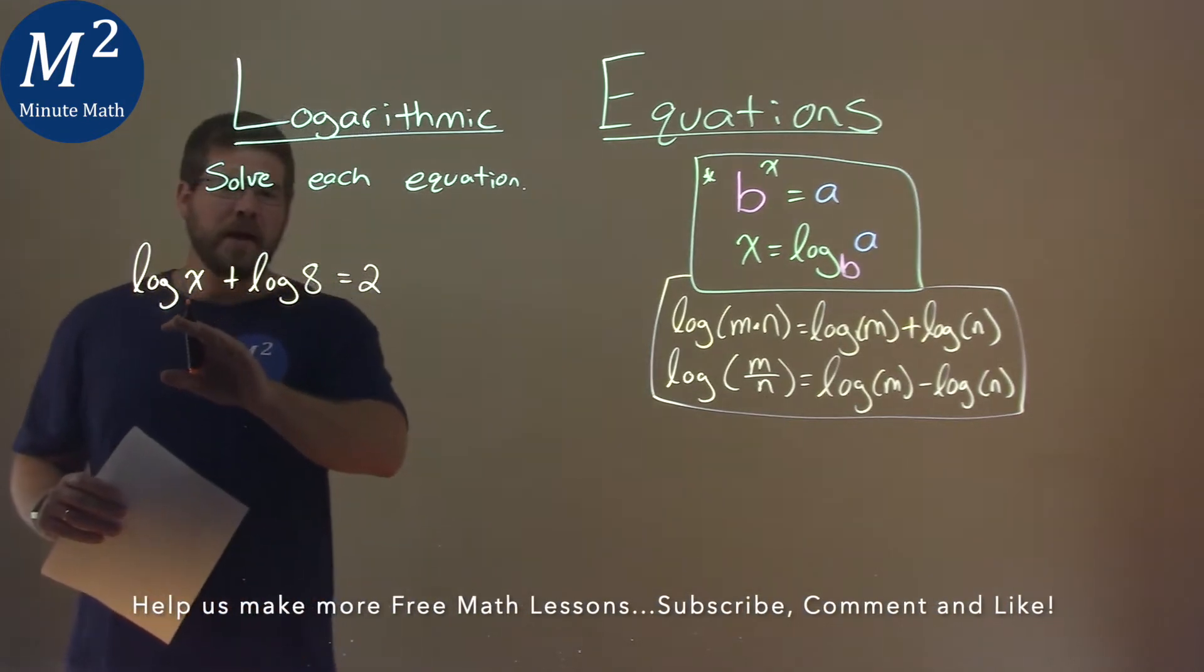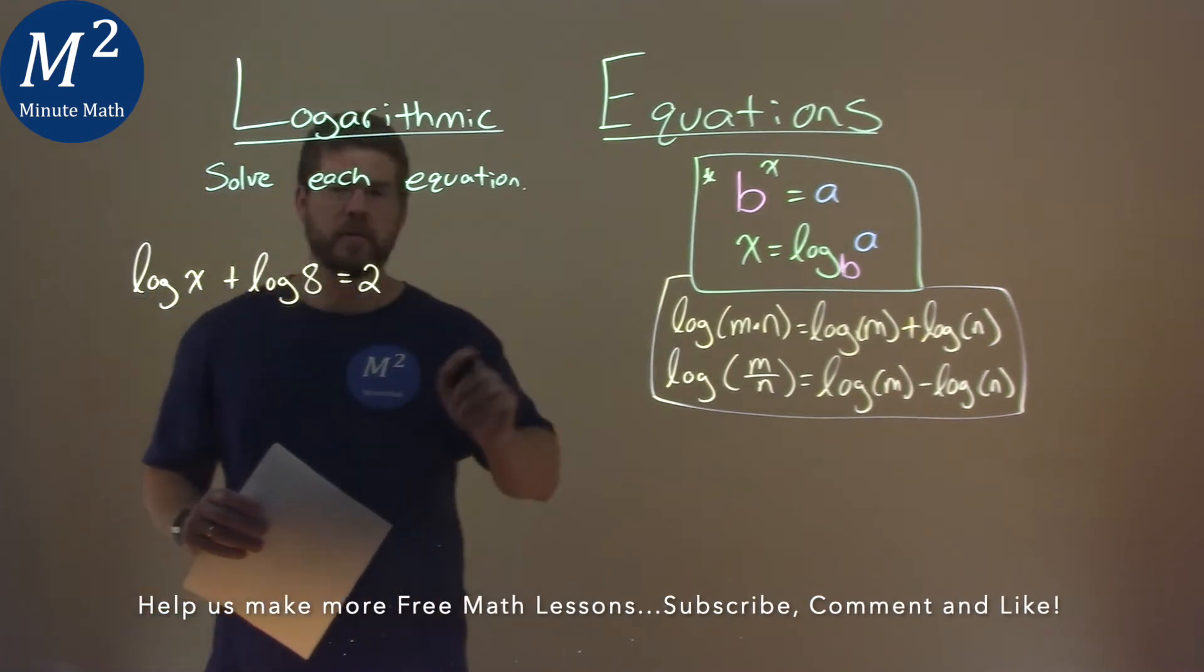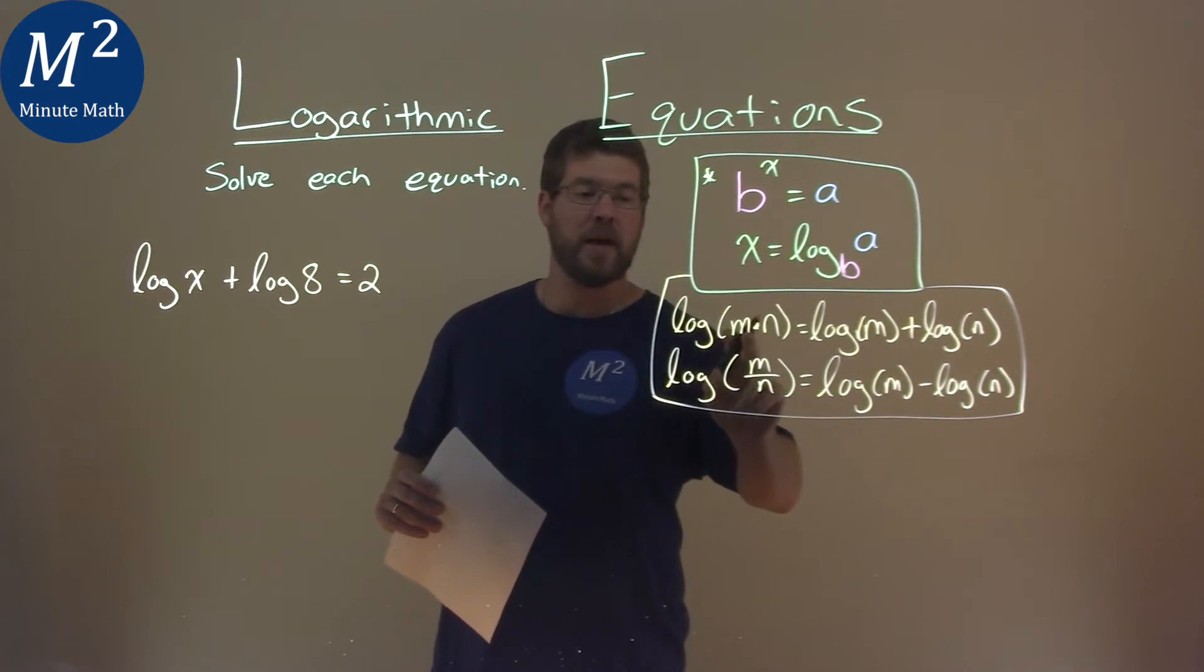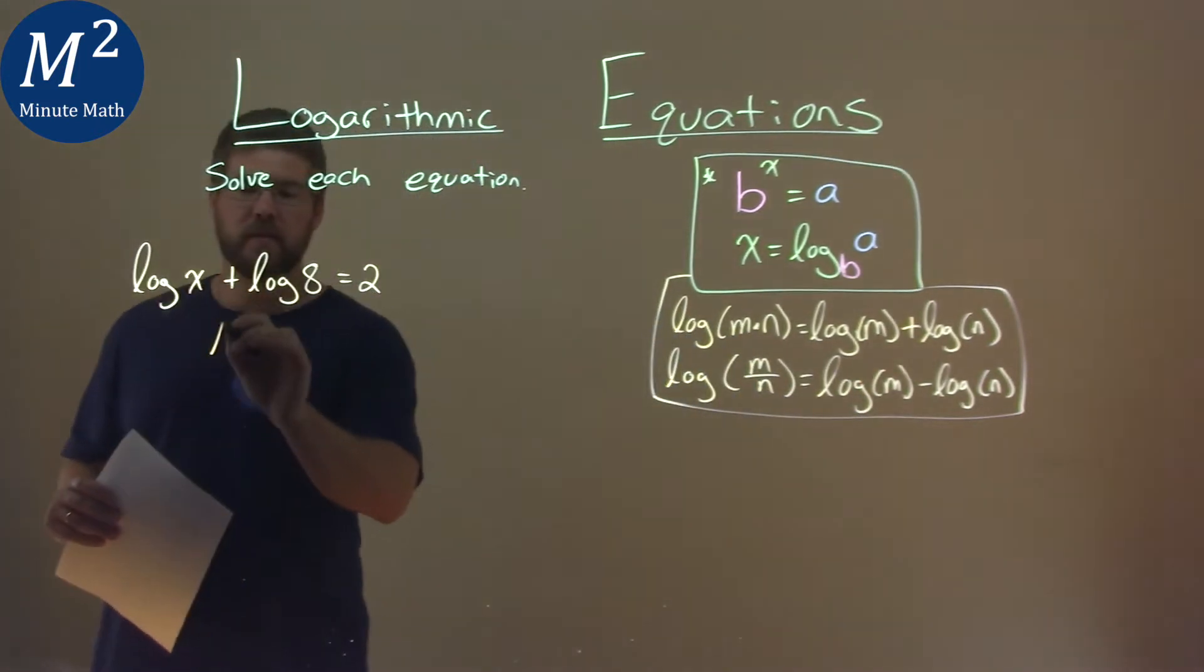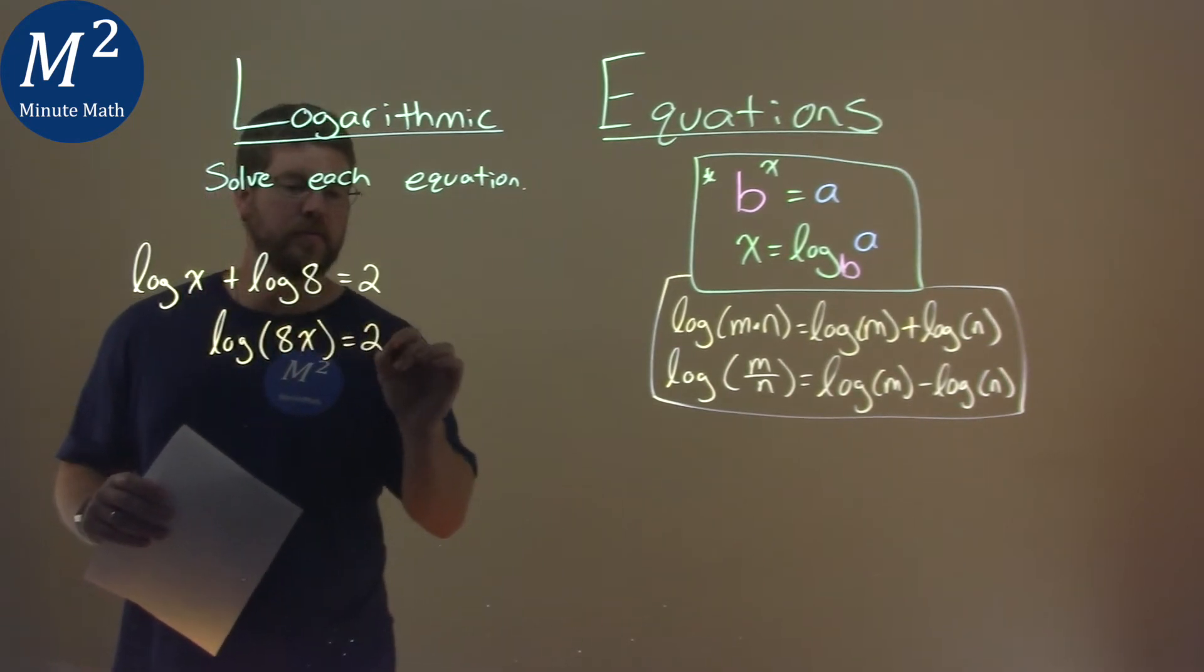Well, right now we have the same base of 10, not really given to us, but we can use a formula here. We know the log of m plus the log of n is equal to the log of m times n. So we set this to be log of x times 8, or 8 times x, and that's equal to 2.